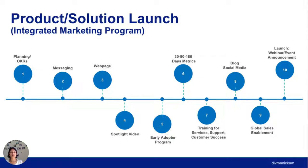You also need to think about training and enablement. First, training is for your services team, support team, and customer success. Making sure we have all those things ironed out first. Then you're putting together your blog and social media content. Once you have all of those ready, right before the launch, you're also working on your global sales enablement. Once you've completed those, you're ready for launch.